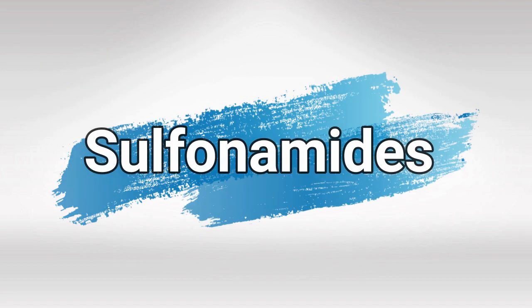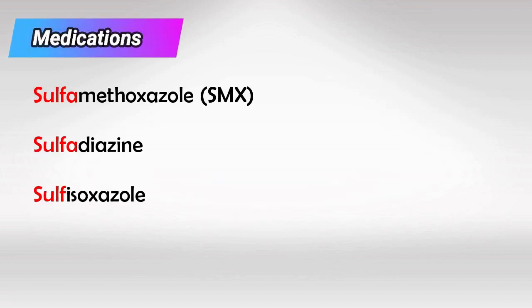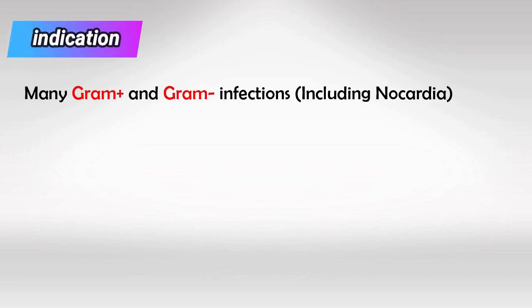So first, sulfonamides. These are the sulfonamide medications. They're used for both gram-negative and gram-positive infections, including nocardia. Nocardia infection perfectly mimics TB infection — in my Step 1 exam I actually had a question that was a long scenario about a patient with a clear case of TB, but the PPD was negative, so the answer was nocardia.